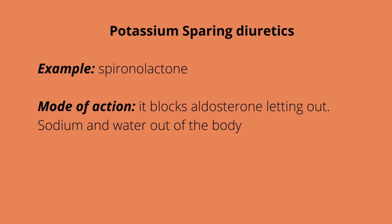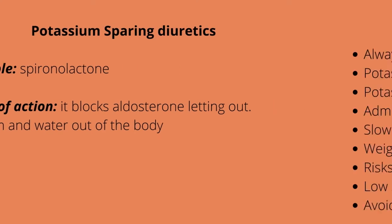Let's talk about potassium-sparing diuretics. The example for this is spironolactone. The mode of action: it blocks aldosterone, letting sodium and water out of the body. Remember the RAS system — refer to our fluid and electrolyte video. Aldosterone causes the reabsorption of salt and water and the wasting of potassium. So if aldosterone is not functioning, we will not reabsorb that salt and water and we are not going to waste the potassium.